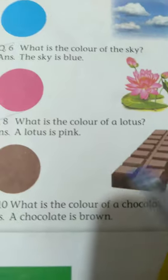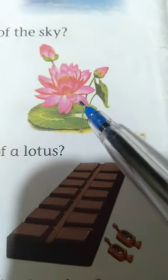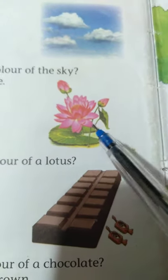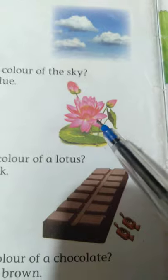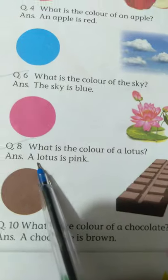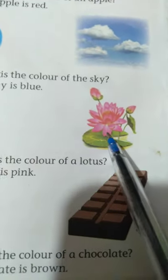Next, what is the color of a lotus? Look at the picture. This is a flower named lotus. A lotus is pink. Pink means kulabi.